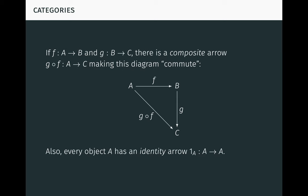In addition to composite arrows, every object A has an identity arrow, typically denoted 1_A, from A to A. We don't usually draw the identity arrows in diagrams.